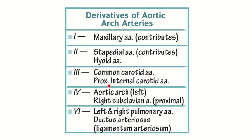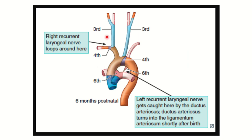From the third arch — common carotid artery and proximal internal carotid artery. From the fourth arch — aortic arch and right subclavian artery. From the sixth arch — left and right pulmonary arteries and ductus arteriosus, which is later converted into the ligamentum arteriosum. The fifth arch was absent and vanished.